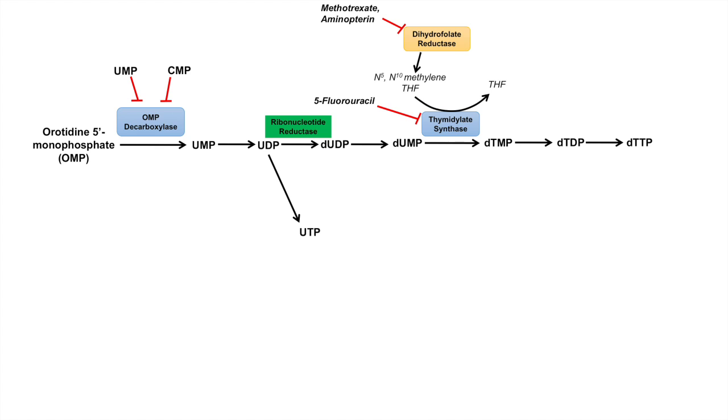Once you get UTP, it can be processed into CTP via the enzyme CTP synthase and utilizing ATP and glutamine. This enzyme is actually inhibited by CTP, so it's a negative feedback regulation on the enzyme. These two, UTP and CTP, can actually be used for RNA synthesis. Remember, uracil and cytosine are used for RNA synthesis, and this is where it's actually coming from.